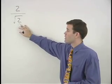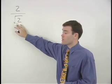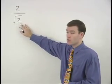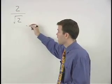So here our first step is to get rid of the radical in the denominator by multiplying the square root of 2 in the denominator by itself.